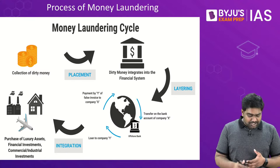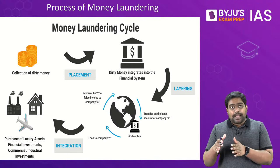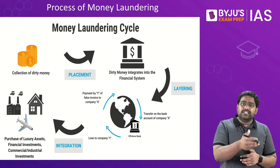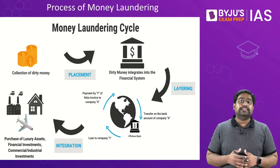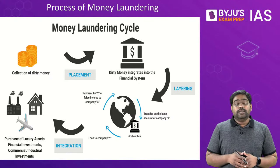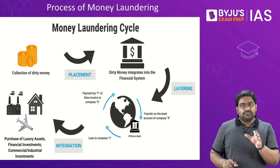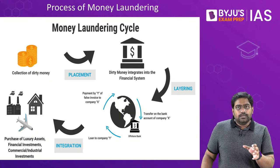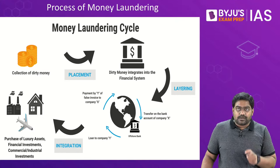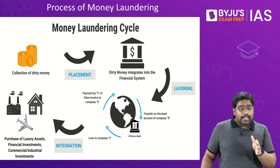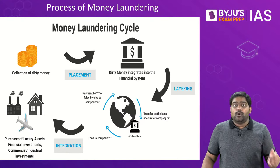Money laundering has the potential to disrupt the global financial system itself, and also impacts society because it has direct links with organized criminal activities, terror financing, government corruption, drug trafficking, and arms smuggling. If it is not kept under check by the authorities, it could destabilize the economy — not just of one country but the global economy — and could lead to devastating consequences for society and national security.